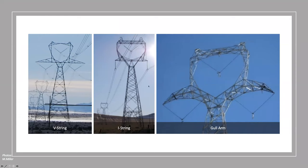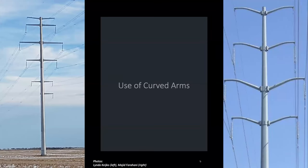Gull wings can be done to change the appearance and improve the appearance somewhat of the structure. Also, some typical straight arms on the left versus curved arms on the right — these are fairly simple things that can be done now and can continue to be done. The public does have a say in some of these decisions and they do have cost impacts. Some have more cost impacts than others, but they have been accommodated in the past.